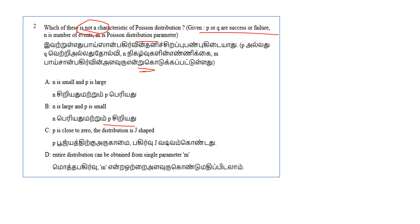N small and P large is the Binomial distribution characteristic. For Poisson distribution, N is too large and P is too small. Other Poisson characteristics: if P is close to 0, the distribution is J-shaped; and the entire distribution can be obtained from the single parameter M. So option A — N is small and P is large — is NOT a characteristic of Poisson distribution. Option A is the correct answer.